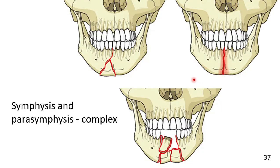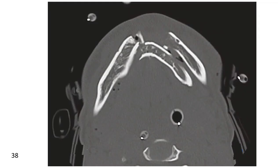This is the axial CT that allows for proper assessment of the vestibular and lingual cortices. Complex fractures of the symphysis and parasymphysis area, that is between the canines of the mandible, include comminuted fractures, chronically infected simple fractures, and defect fractures.